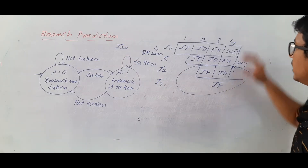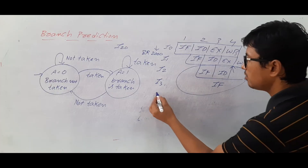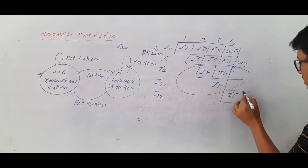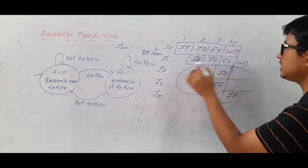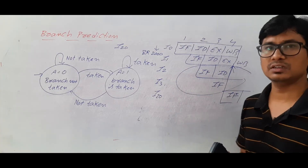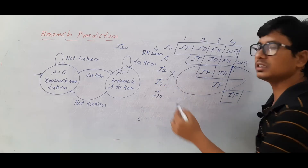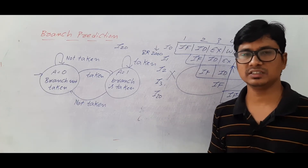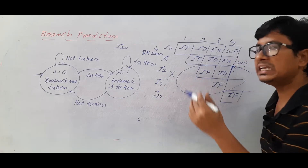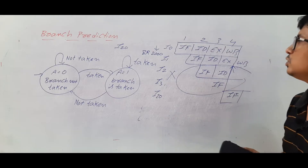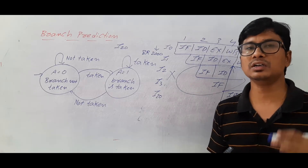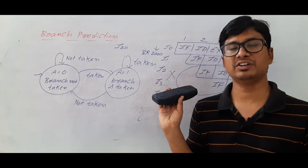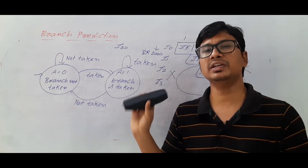Once we determine the branch target is i20, we must fetch i20. But i2 and i3 have already been fetched and partially processed — these are wasted. One solution is flushing: remove those incorrectly fetched instructions from the pipeline. Another solution is delayed branching: once you suspect a branch instruction, do not fetch the next instruction; just wait until the target address is known.